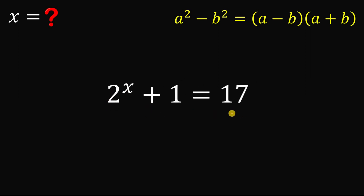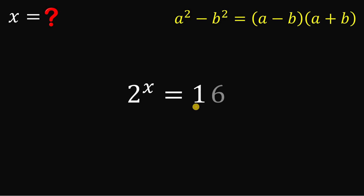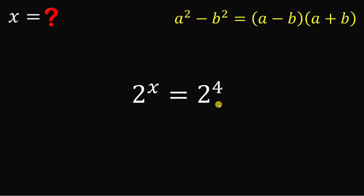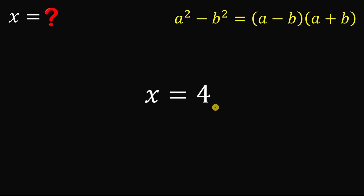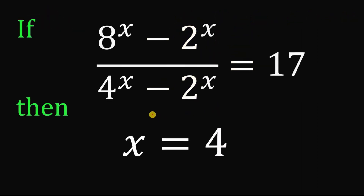So we have 2 raised to x plus 1 equals 17. Subtracting 1 from both sides gives 2 raised to x equals 16. Since 16 can be written as 2 raised to the power of 4, we have equal bases, so the exponents must be equal. Therefore x equals 4. That's the answer: if 8 raised to x minus 2 raised to x over 4 raised to x minus 2 raised to x equals 17, the only real value of x is x equals 4.